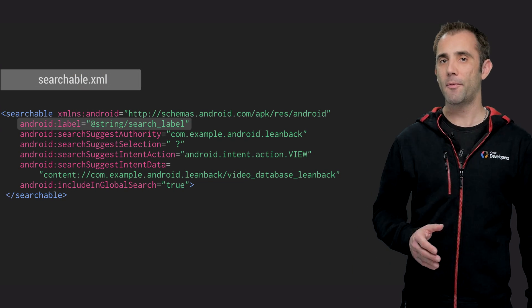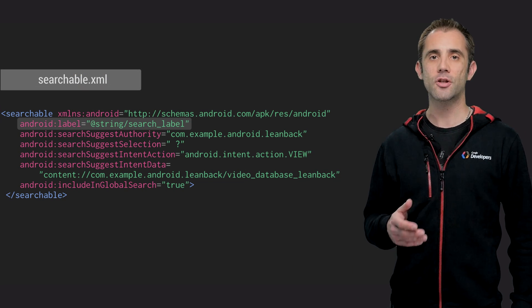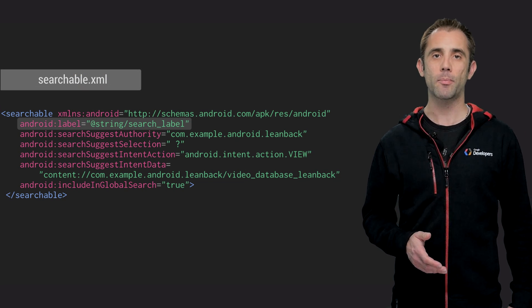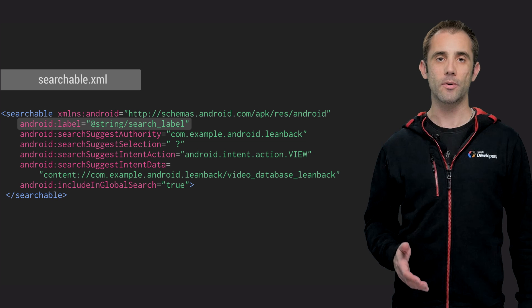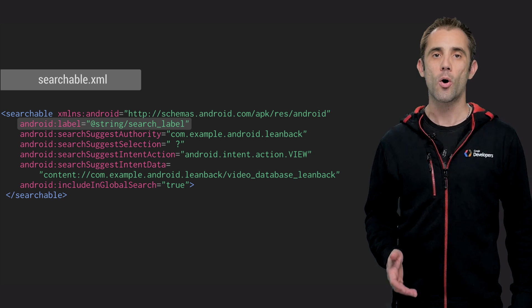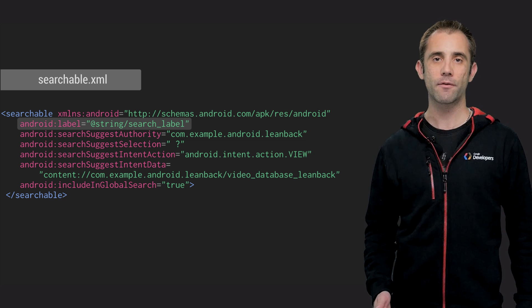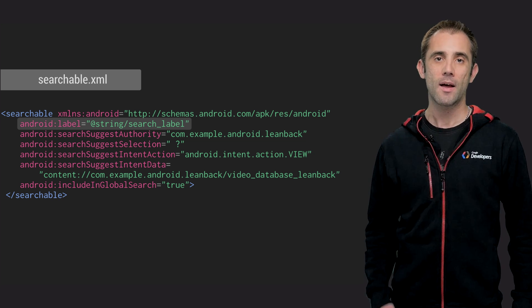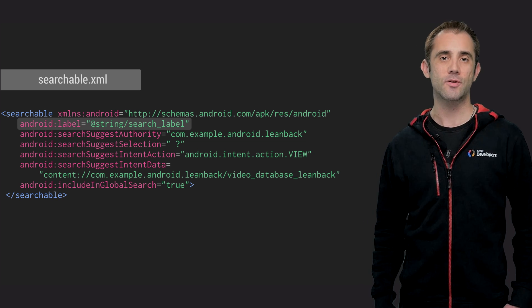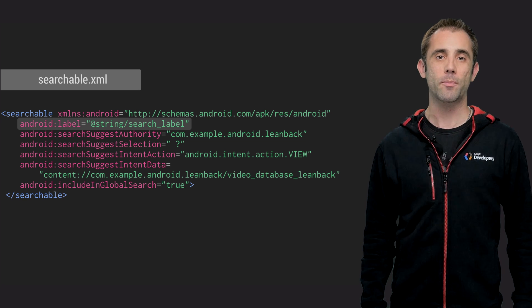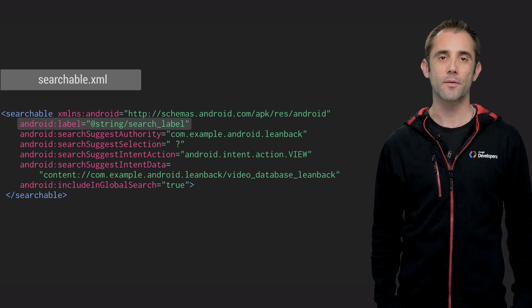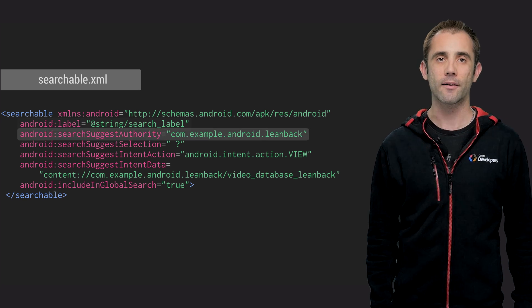Label is the name of your app, and it should be the same as the name applied to the Android label attribute of your activity or application manifest element. This label is used to identify your application when providing search results and to categorize it.